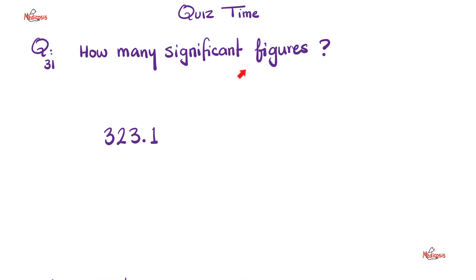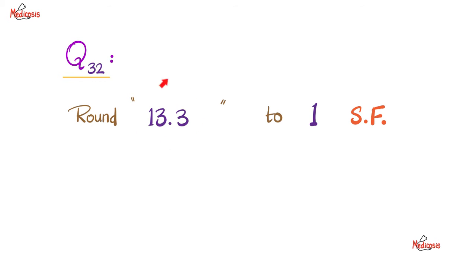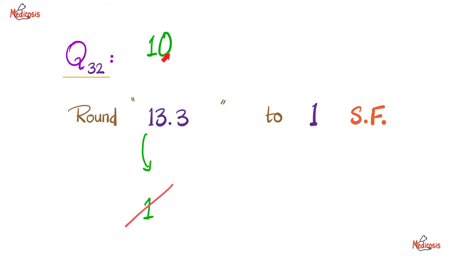Yet another question: how many significant figures do we have here? All of them are significant — all non-zero digits are significant — so we have four significant figures. Can you round 13.3 to one significant figure? The doofus just takes the first one and writes 1 — that's wrong. You want to reduce 13.3 to 1? That's like going from 100% to 8%. Instead, you should write the 1, but do not stop there — give me something not significant after it: write 10.